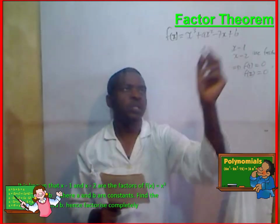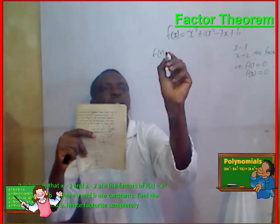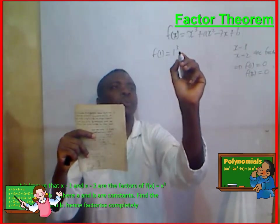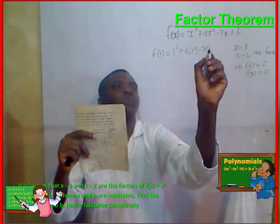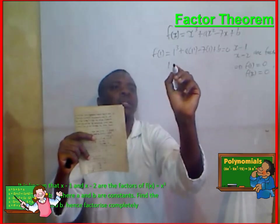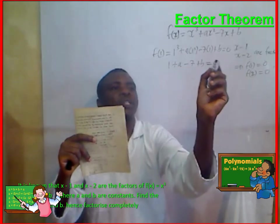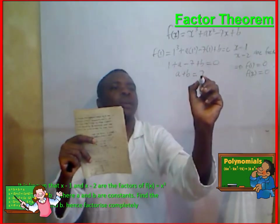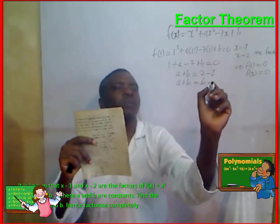So now, let's substitute into our polynomial. Let's get f of 1. This is equal to 1 cubed plus A times 1 squared minus 7 times 1 plus b, which is equal to 0. So, 1 plus A minus 7 plus b is equal to 0. Therefore, A plus b is equal to 7 minus 1, which gives us A plus b is equal to 6. We call this equation 1.